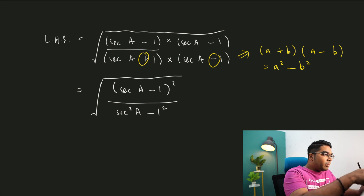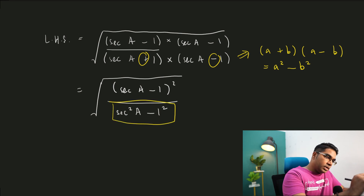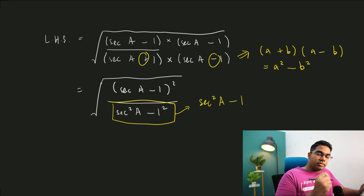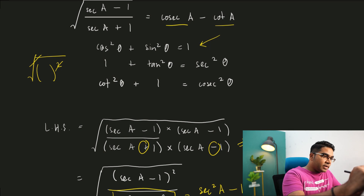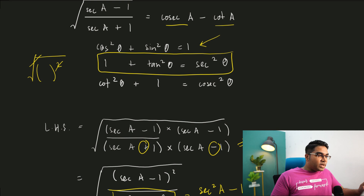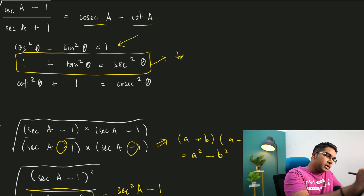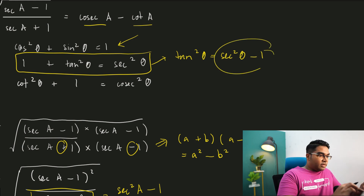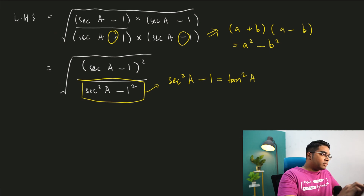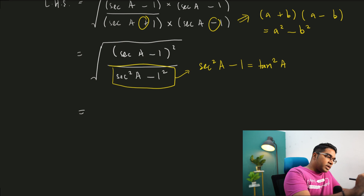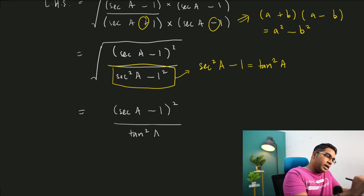Now looking at secant squared a minus 1 in the denominator, it's time to use our basic identities. From the identity 1 + tan² θ = sec² θ, rearranging gives tan² θ = sec² θ minus 1. This is exactly what we have. So secant squared a minus 1 equals tangent squared a. Substituting back, we have the square root of secant a minus 1 squared over tangent squared a.